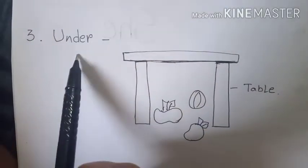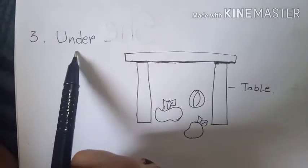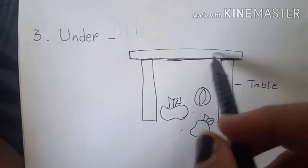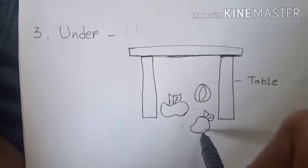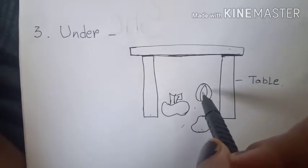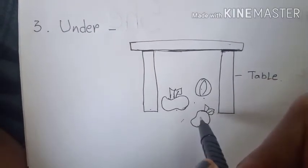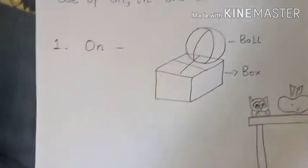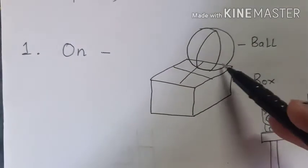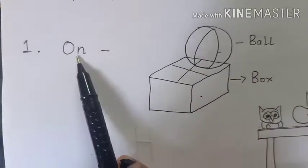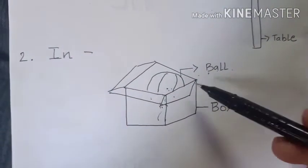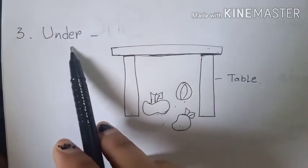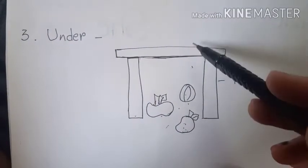Now, 'under'. Under ka matlab niche — kisi chiz ke niche. Here, I have a table. Table ke niche kuch saman hai. There are a few things under the table: a ball, an apple, a mango. These things are under the table. So students, where will we use 'on'? Jabb kuch saman kisi ke oopar ho — then we use 'on'. Where do we use 'in'? Jabb kuch saman andar hota hai — then we use 'in'. Where do we use 'under'? Jabb kuch saman kisi ke niche hota hai — we use 'under'.